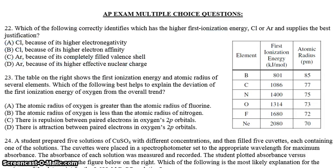Okay, let's take a look at the second one, number 23. The table on the right shows the first ionization energy and atomic radius of several elements. And here they are. We have from boron all the way down to neon. So we're actually looking at the second energy level on the periodic table.